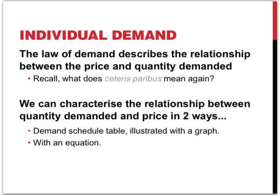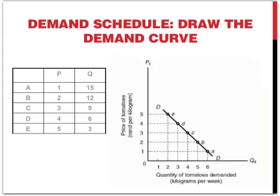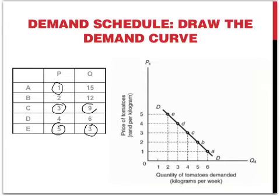We can characterize the relationship between the quantity demanded and the price in two ways: first, with a demand schedule that can be drawn as a demand curve, or with an equation. The demand schedule shows the different combinations of prices and quantities demanded at those prices, and it reflects the law of demand. At high prices, like 5 rands, a small quantity of only 3 units is being demanded. Then at lower prices, if you go down to 3 rands, the quantity demanded increases up to 9. At 1 rand, the quantity demanded is 15.